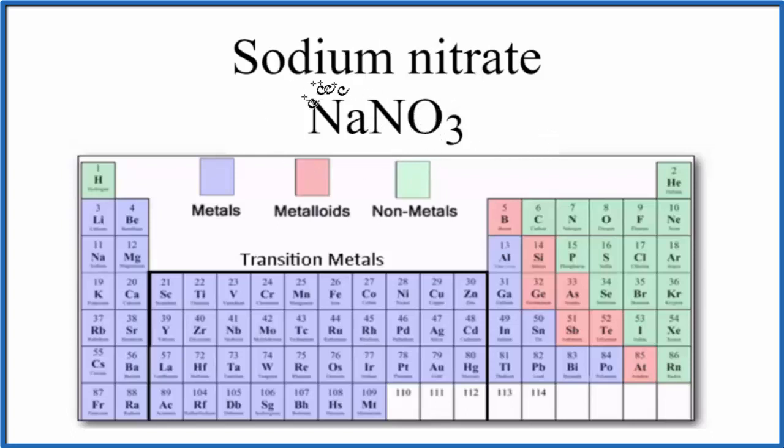So on the periodic table, we look at sodium here. There's sodium. That's a metal. So we have a metal for sodium.